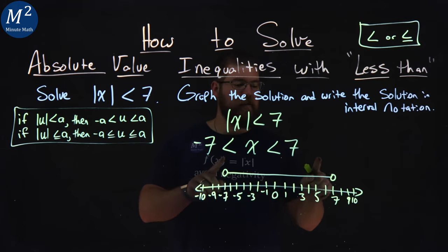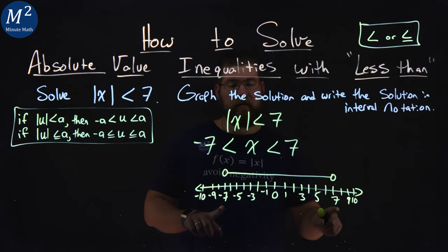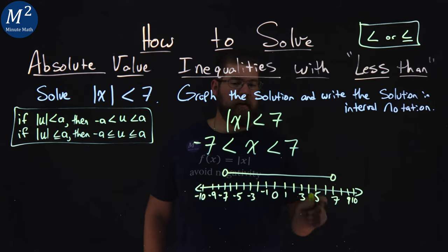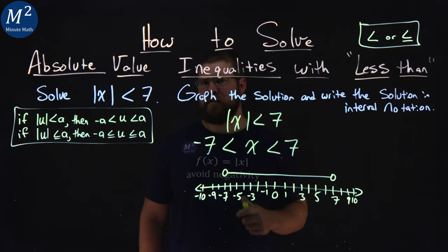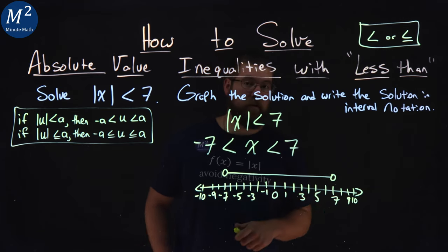The only way it doesn't get true is as we get to the ends here. That's 7 and negative 7. If we put 7 in, absolute value of 7 is a positive 7, which is not less than 7. They're equal. So that's the open circle there.